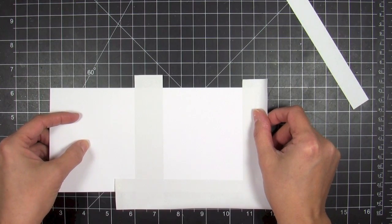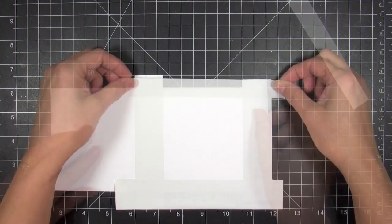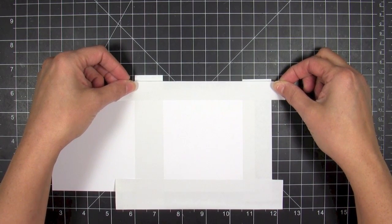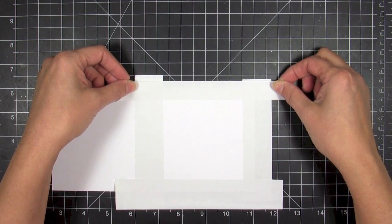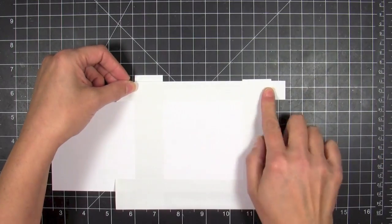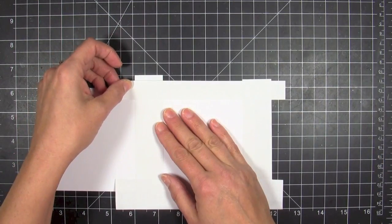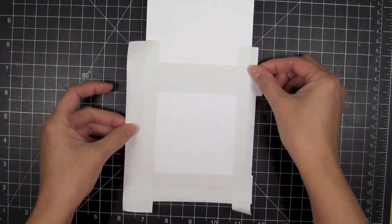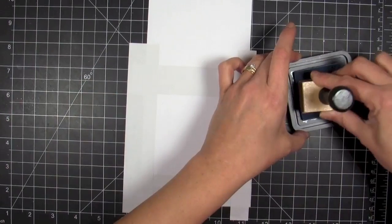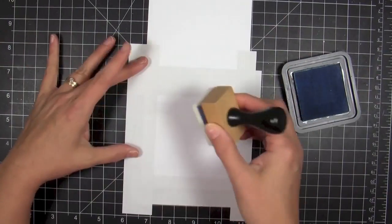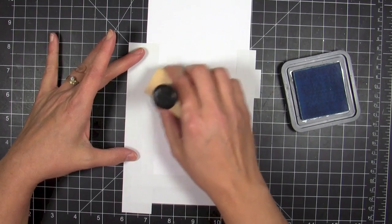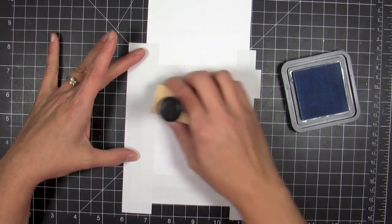Once we have the Eclipse tape in place, we're ready to go. I love this tape for this technique because it doesn't lift or curl up when I'm getting abusive with it. I'm going to take my ink applicator tool...